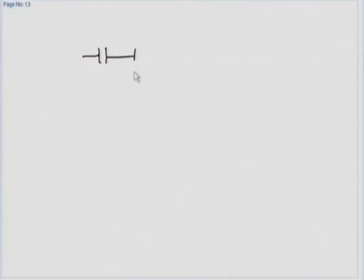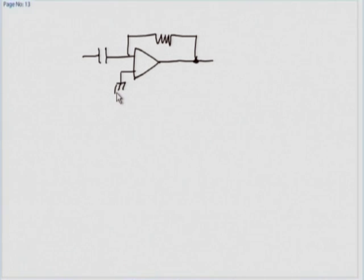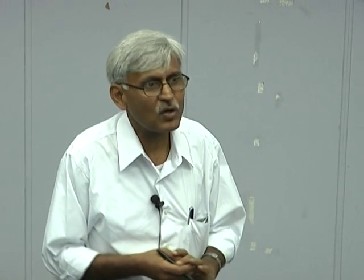These are the two major configurations, but these are not the only two — these are only resistive combinations. Let us see what happens if I replace one of the resistors in the inverting configuration with a capacitor. So let us draw that configuration: I have replaced R1 by a capacitor C, and because we have only one resistor we call it R.